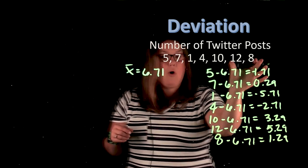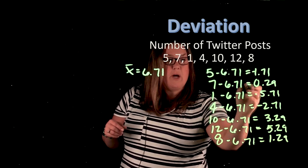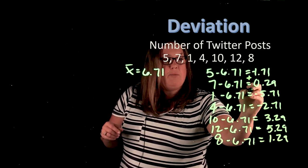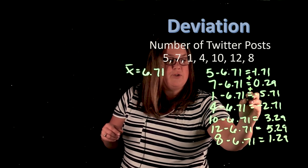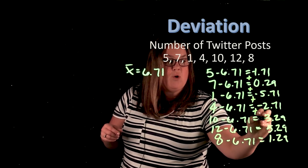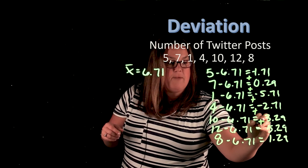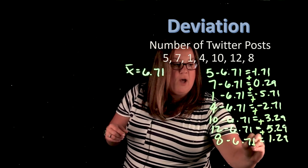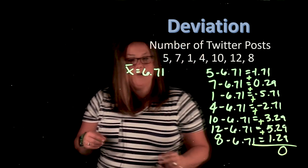Now, if you were to add all of these deviations up, so if you add negative 1.71 to 0.29 to negative 5.71 to negative 2.71 to 3.29, you would notice that they sum to 0.